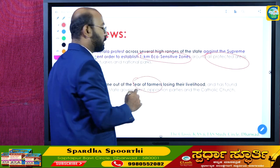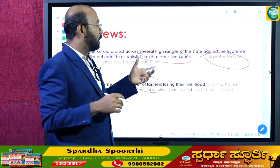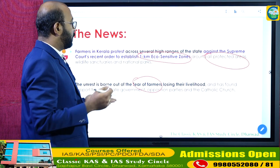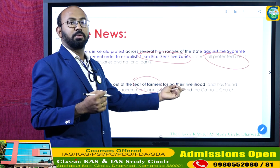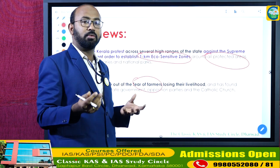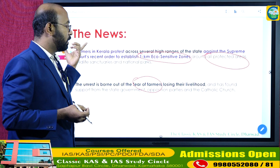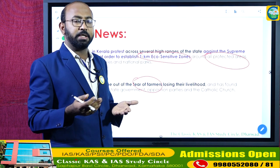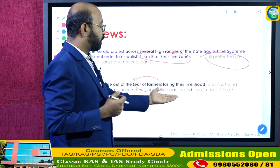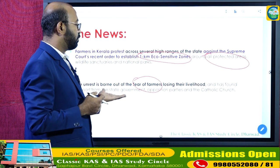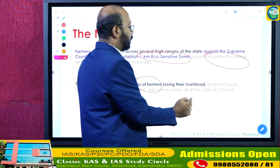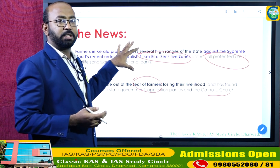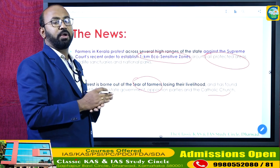The unrest and protest arose from the fear of farmers who are living in these eco-sensitive zones. They are worried that their livelihood will be affected because of this Supreme Court judgment. This protest is being supported by the state government, some opposition parties, and the Catholic Church — Christianity being a major religion in Kerala. The church is also involved in supporting the cause of the farmers.